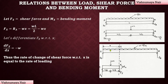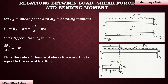In order to find out the shear force and bending moment variations along the length of this beam, we have to consider a section at a distance of X meters from end A. Let Fx be the shear force and Mx be the bending moment at this section. These can be found by considering either the left or right portion of the section. Let us consider the left portion.